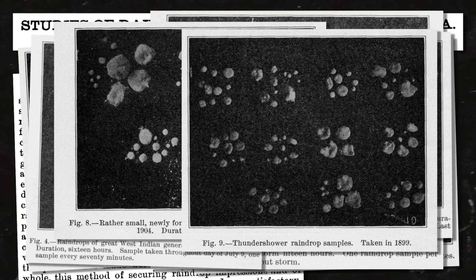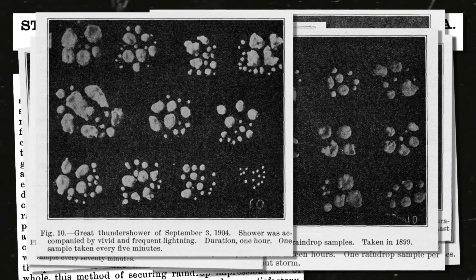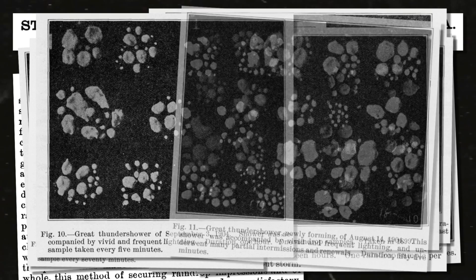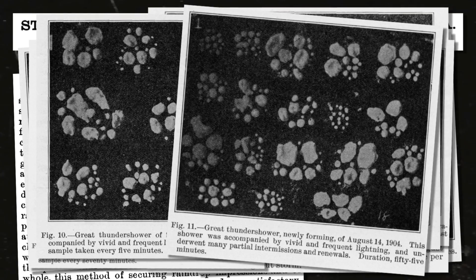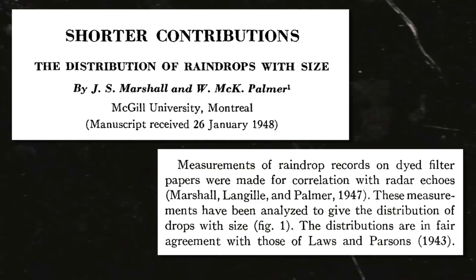He basically found that as a rule of thumb, the heavier the rain was, the bigger the drops are. Beyond that he found quite a variety of different outcomes. He was indeed the pioneer in this, and people then went on to make more quantitative measurements and started finding empirical rules. Here's one of the definitive papers on this, which is actually only one page long, by Marshall and Palmer in 1948.